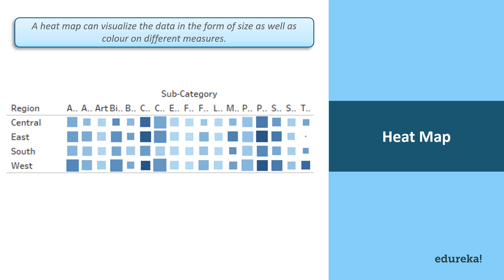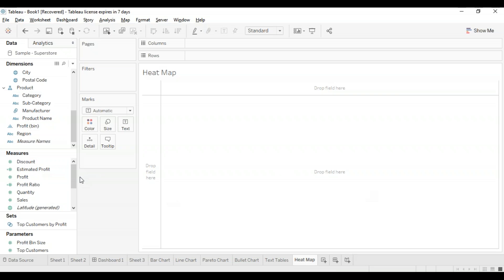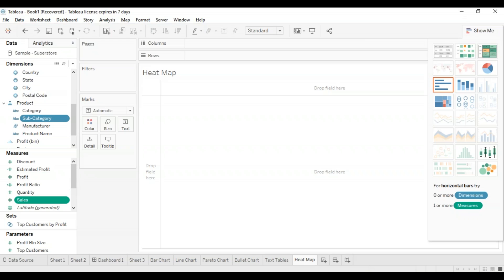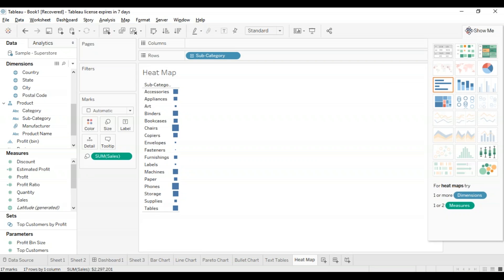Next up we have a heat map. This is basically a graph which can visualize data in the form of size as well as colors on different measures. Two different measures can be visualized simultaneously using a heat map — one measure can be assigned to size, whereas another measure can be assigned to the color of the heat map. I'm going to hold the control key and select subcategory and sales from the data pane, then go to the show me button and select the heat map.